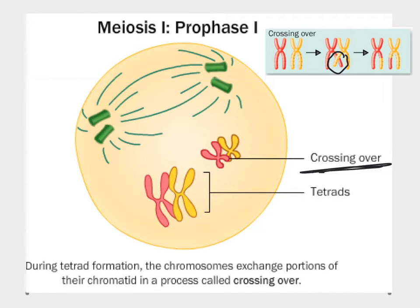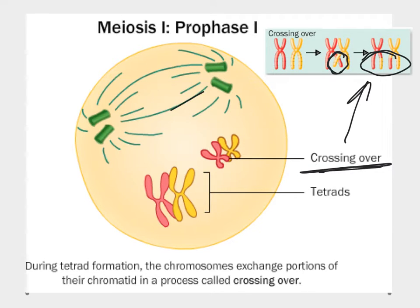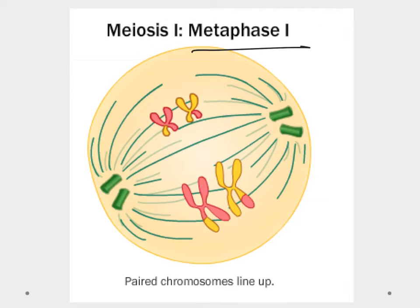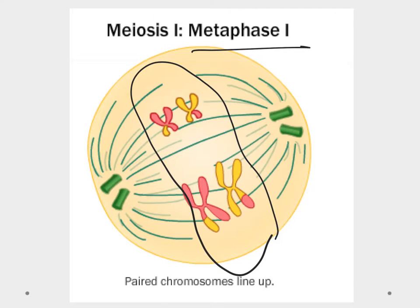During prophase 1, crossing over occurs as chromosomes switch genetic material, blending the DNA from the mother and father strands. The nuclear membrane is gone, spindle fibers are forming. In metaphase 1, chromosomes line up in the middle of the cell — M for middle — with spindle fibers attaching to the chromosomes, getting ready to divide them.